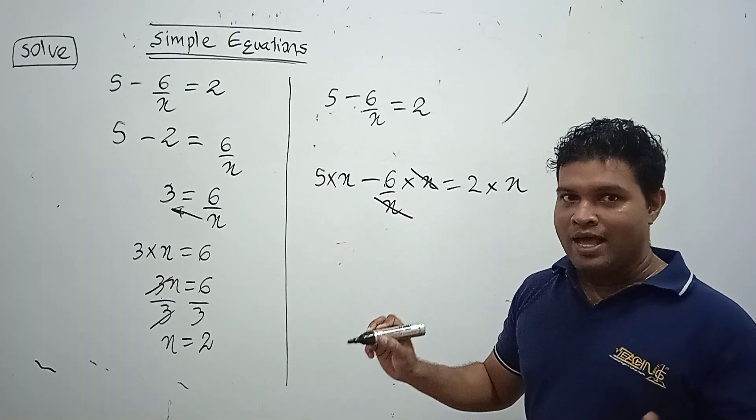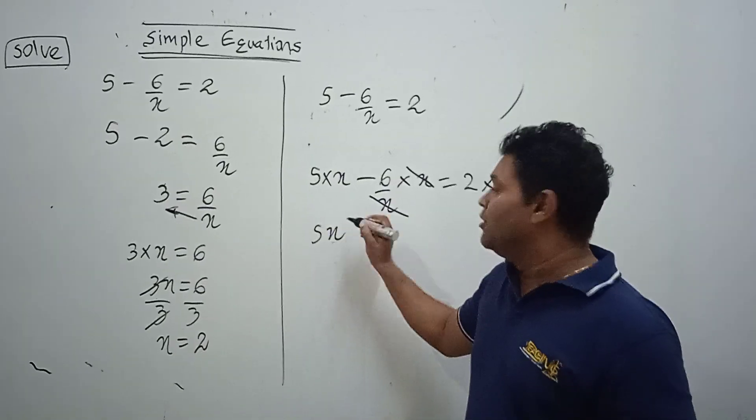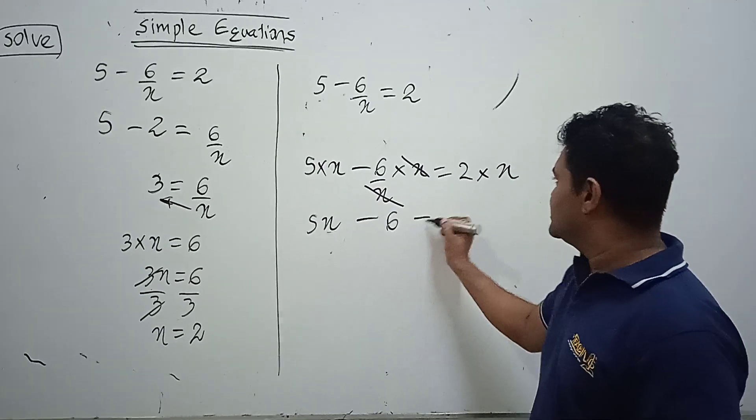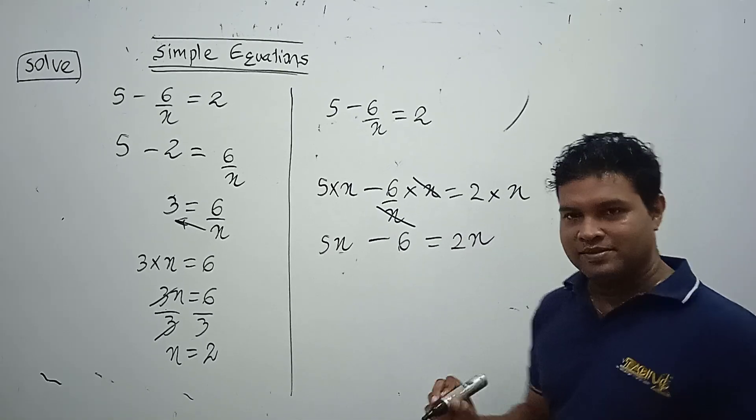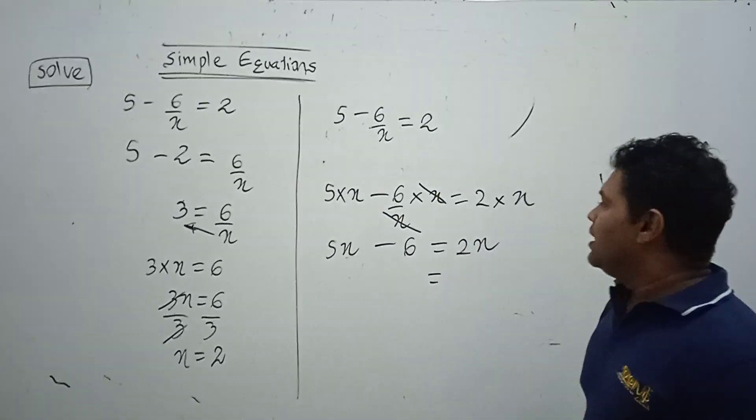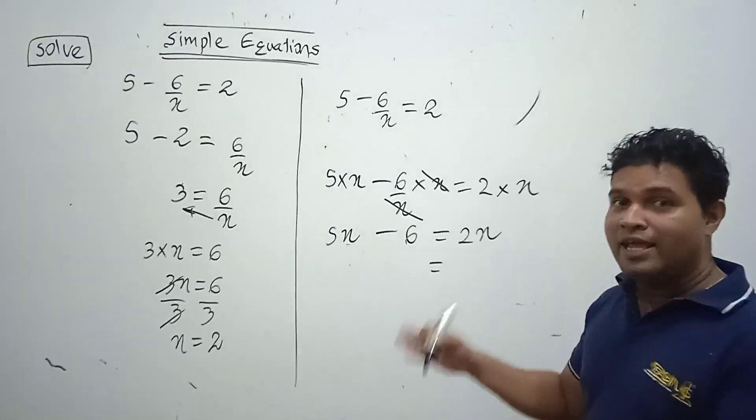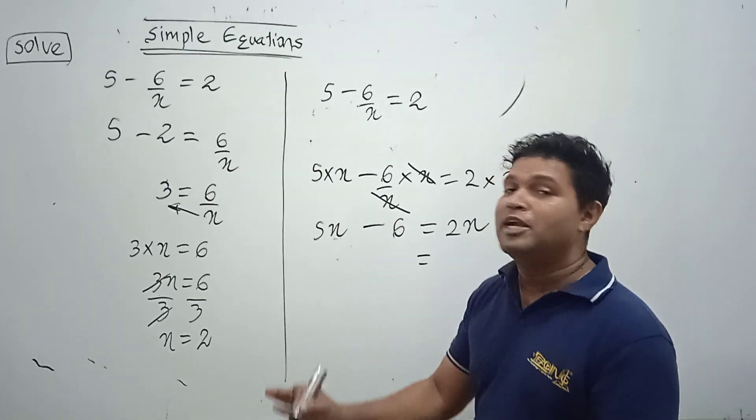Now see, x to x getting cancelled, that is our expectation because we expected to have the terms without denominators. 5x minus 6, 2 times x is 2x. Now it's a simple equation without denominator.